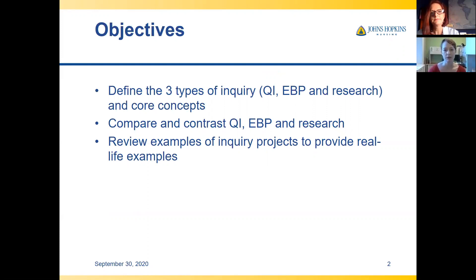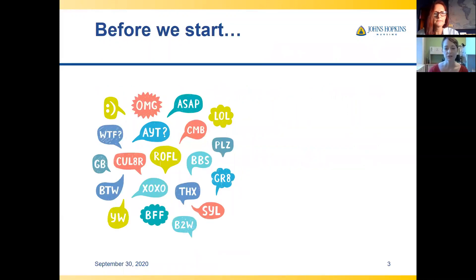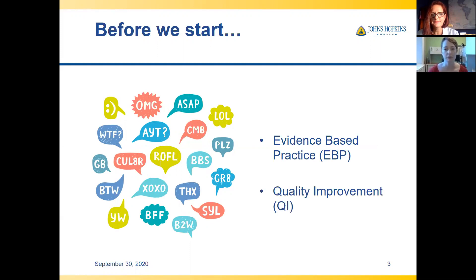So we're going to talk about some core definitions at a high level, and you'll have access to these slides later. We'll compare and contrast the three types and give a concrete example. I also wanted to mention we use a lot of acronyms in nursing. When I say EBP, I'm referring to evidence-based practice, and when I say QI, I'm referring to quality improvement.